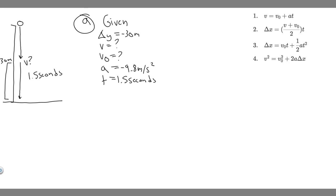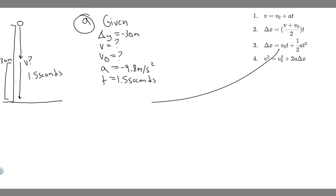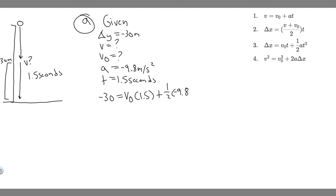Since we don't know v, we avoid equations containing it. We pick the equation that has delta y, v-sub-0, t, and a — which is delta y = v-sub-0·t + ½·a·t². Plugging in: minus 30 = v-sub-0 times 1.5, plus one-half times minus 9.8 times 1.5 squared.